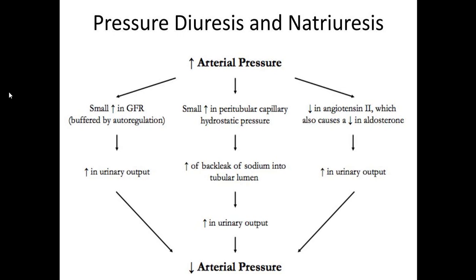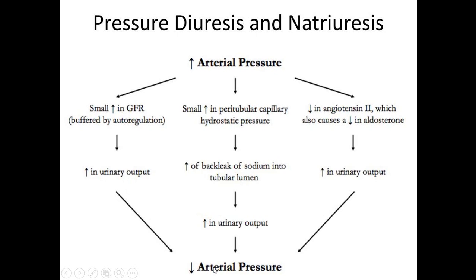This small increase in GFR is enough to lose sodium in the urine along with water. More filtrate will be formed and the speed of flow of filtrate in the nephron will increase. When the speed is more, the net reabsorption of sodium in the nephron will be less, causing increased loss of sodium and water into the urine, which will ultimately decrease arterial pressure.